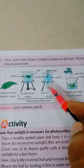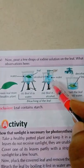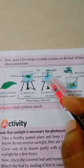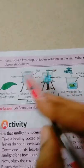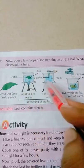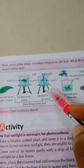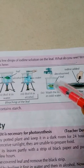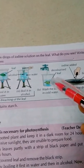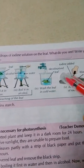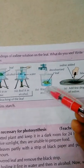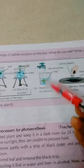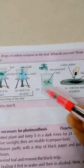Do not boil the leaf directly in alcohol, otherwise it will catch fire. Then we will wash the leaves in cold water. You can see the decolorization of the leaves — the green color of the leaves has faded. There were green leaves before, but now the color is removed.